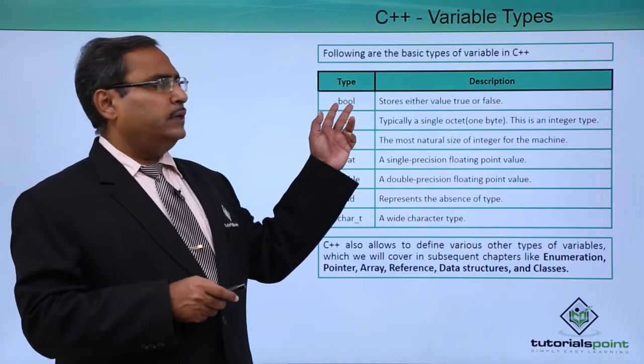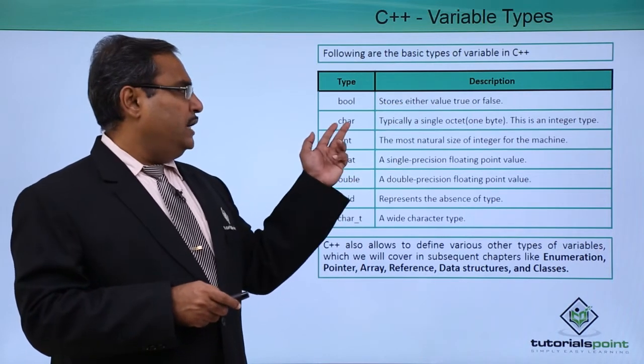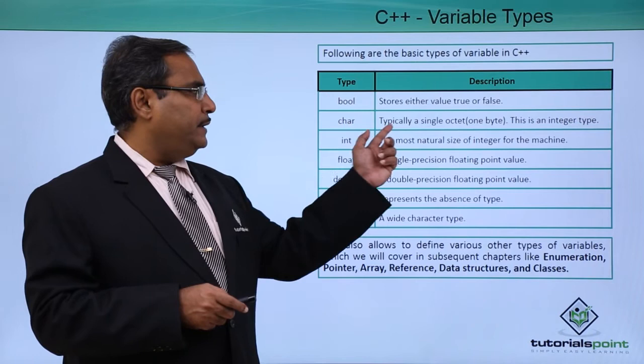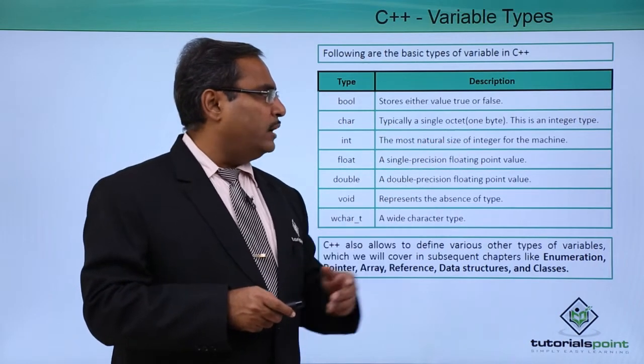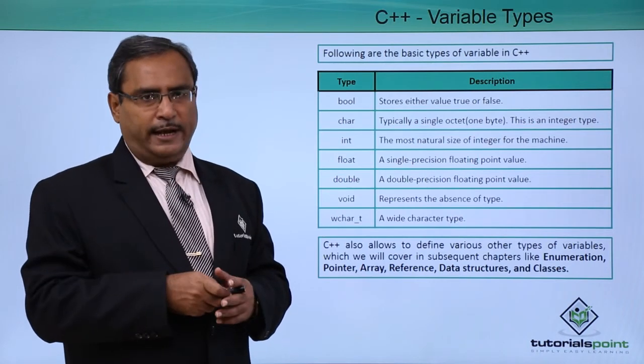If you go for the type bool, then it stores either the value true or false. If it is of the type character, typically a single octet that is one byte will be there and it will be holding the ASCII code of the respective character.